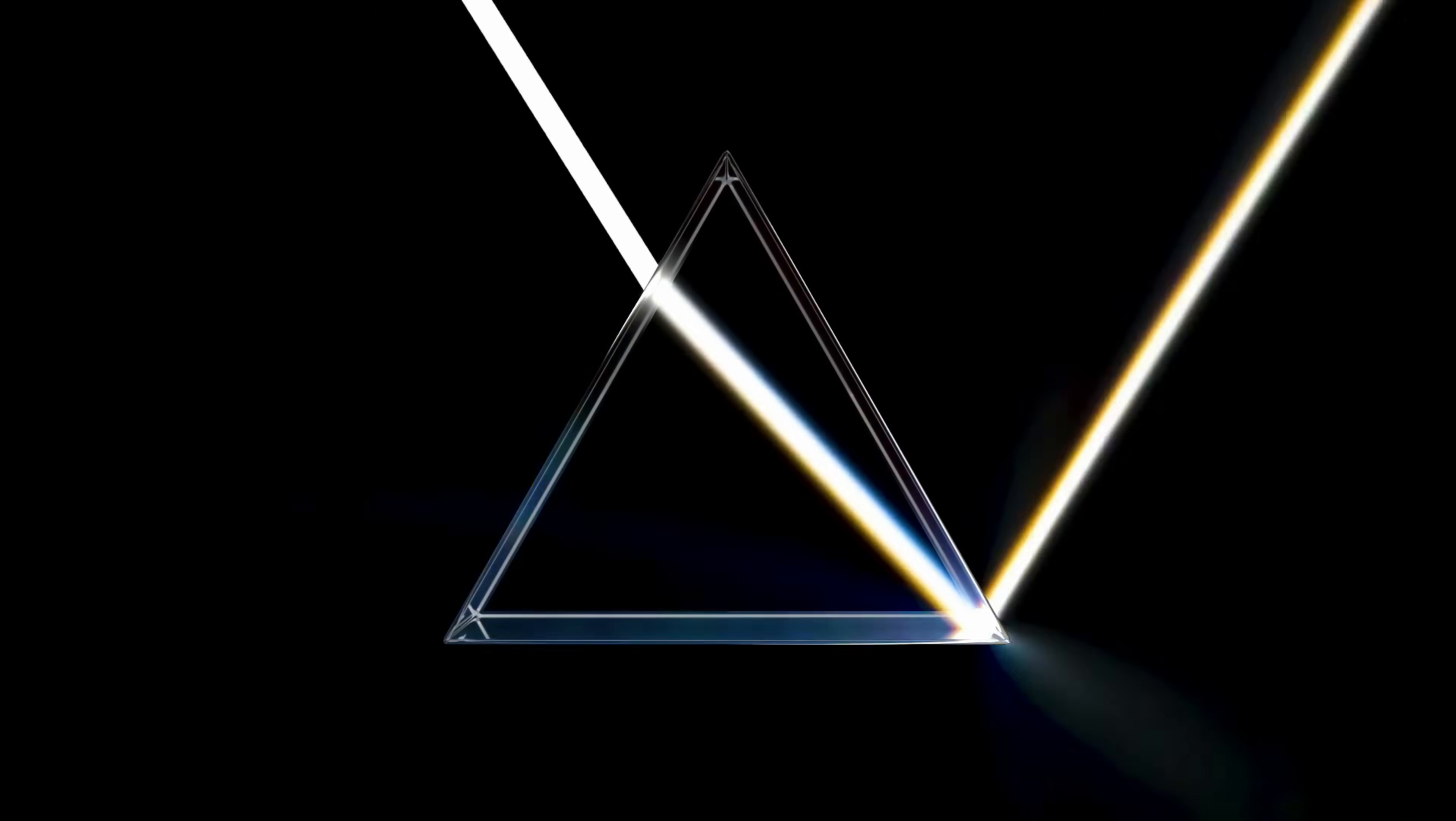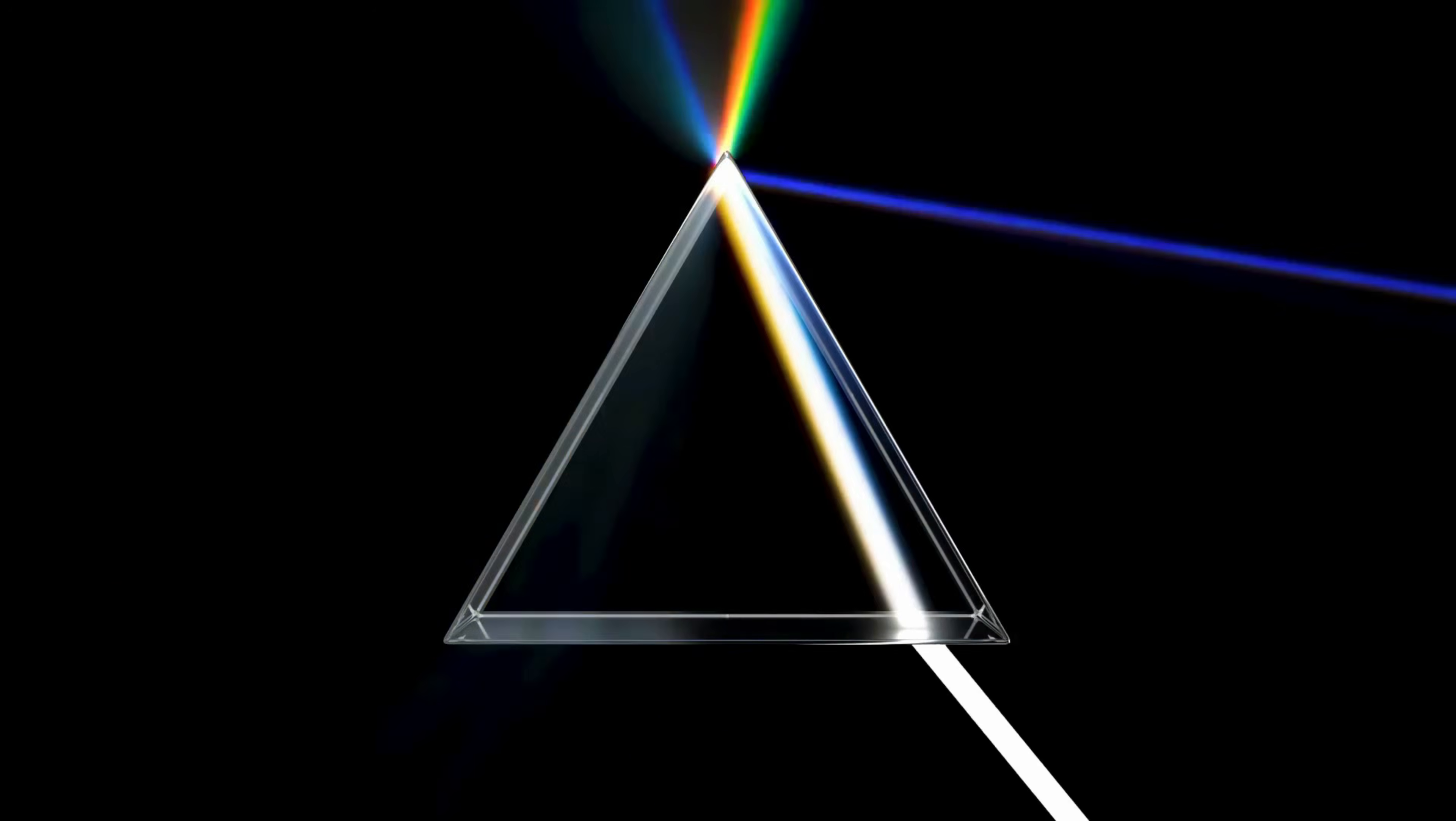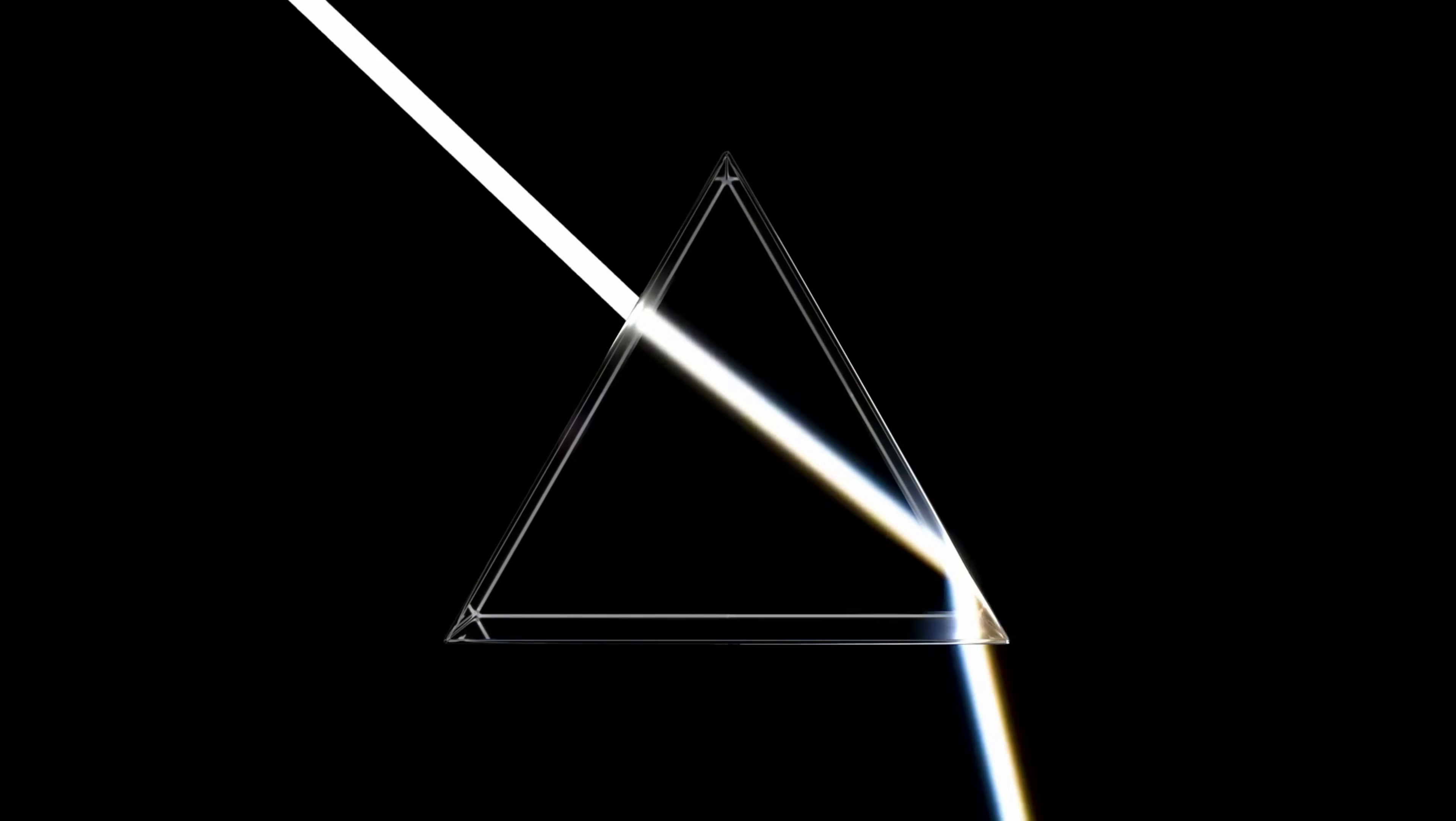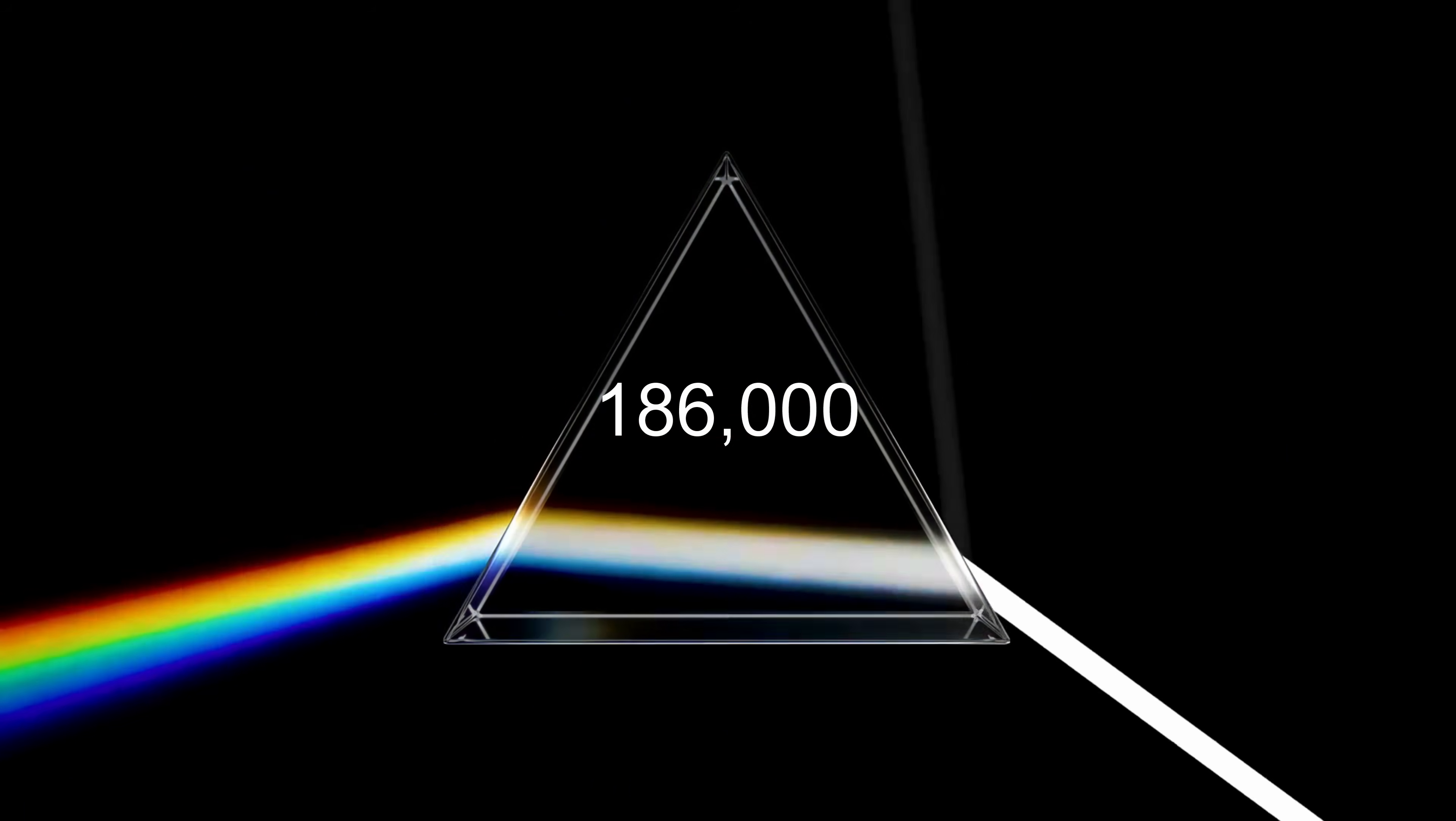Now each time an atom absorbs light, there will be a very small delay before the light is re-emitted. And this accumulating delay makes the light appear to slow down as it moves through the glass. But really, each photon is traveling at the same speed it would in a vacuum, 186,000 miles per second. The overall wave front of light does actually slow down as it passes through materials like glass, but this apparent change in speed is an emergent property of the glass itself, not a change in the properties of light.